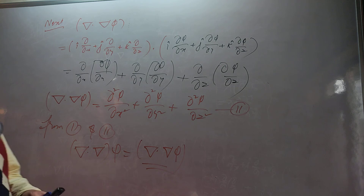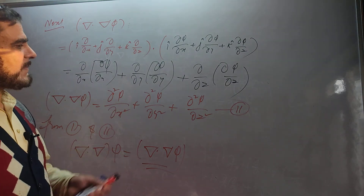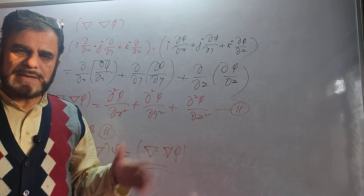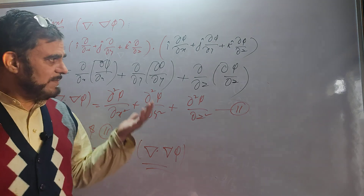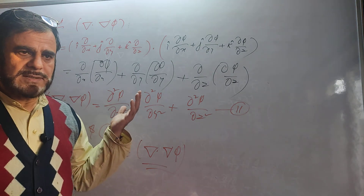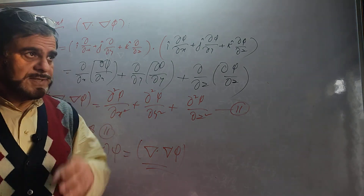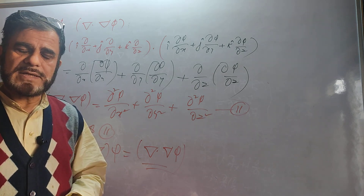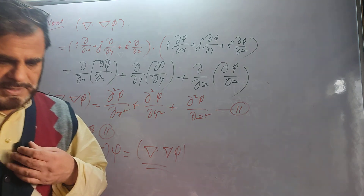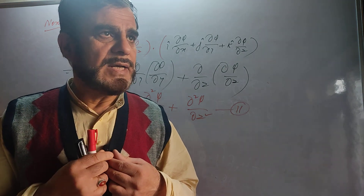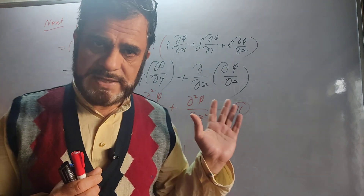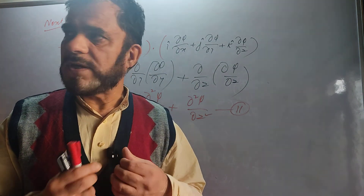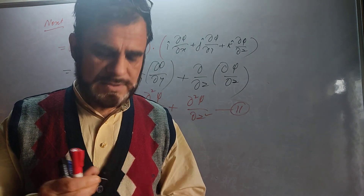From equations one and two, we have proved del · del phi = del · del phi = del phi · del, which proves the result. This is a very important application. In today's lecture we covered the Laplacian operator, Laplace's equation, harmonic functions, and this commutative property. I will give more properties on delta squared operation and also discuss solenoidal and irrotational vectors. Thank you very much — please go through the previous lecture before this one, then these things will be very simple to understand.